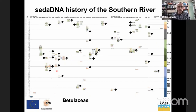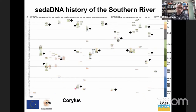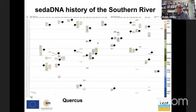Looking at Betulaceae — birch and alder — we see it popping up all over the place fairly early on, uniform throughout the cores. Something like Corylus turns up very early — we may have Corylus presence in the Allerød period — and then quite similarly to what Ben was showing, there's a sudden appearance around that 10,500-year mark, and then it pretty much pops up everywhere. Oaks follow a similar distribution but occur fairly early here too.